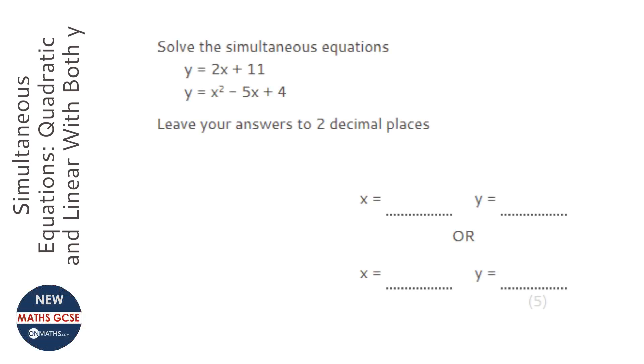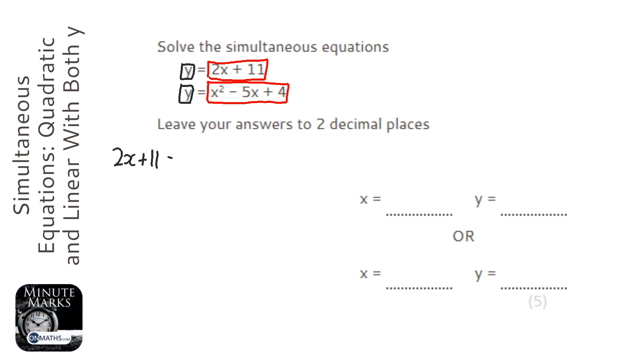Okay, so we've got a linear and a quadratic equation, and the way of doing these is slightly different. If you notice that each equation has this y in. Now, y is going to be equal in both equations, so what we do is we just get the equations equal to each other. So we've got 2x plus 11 equals x squared minus 5x plus 4.